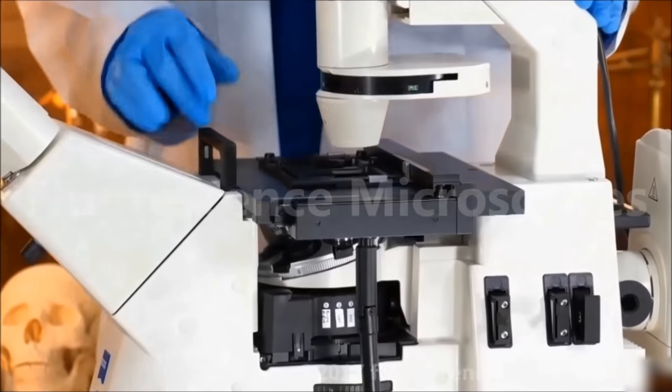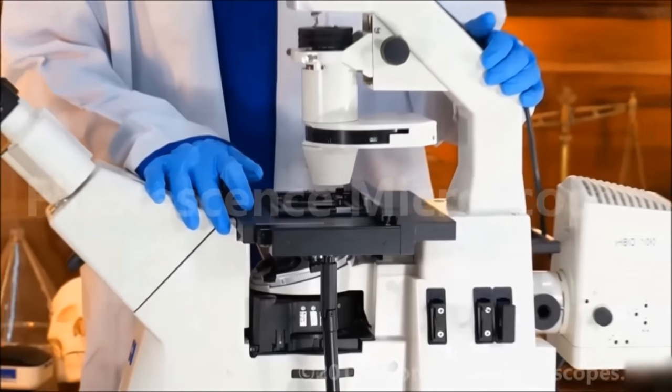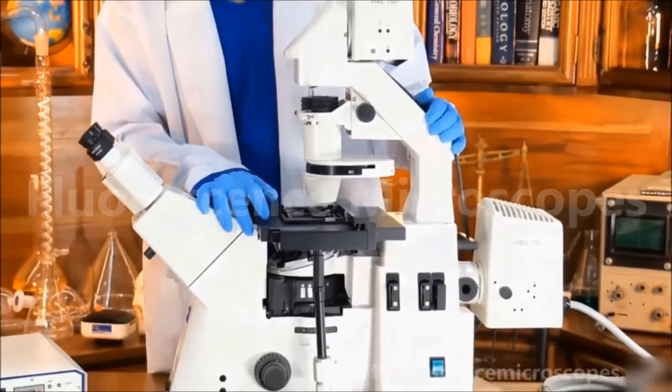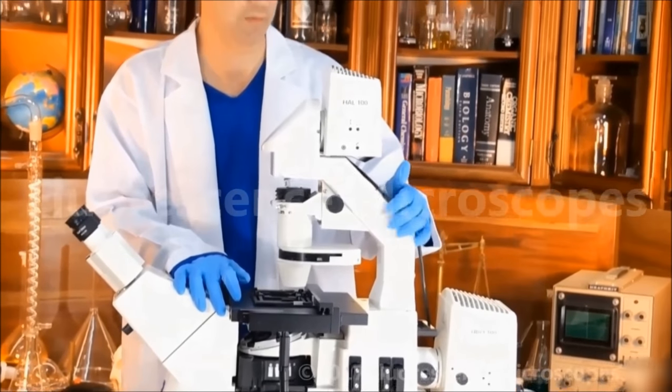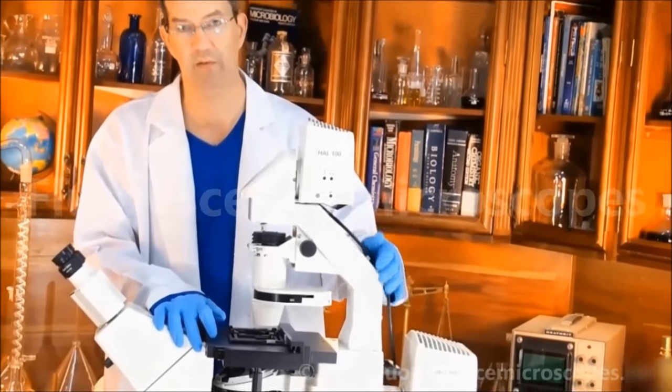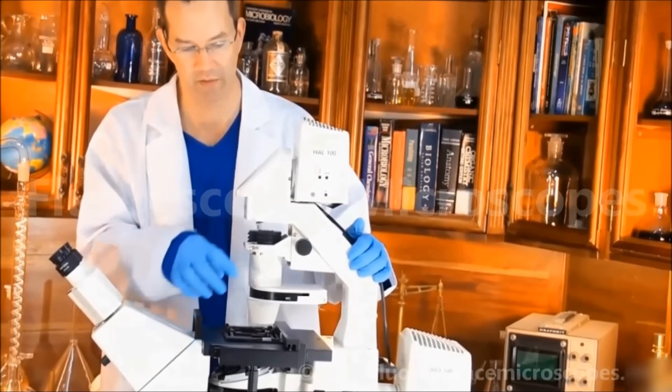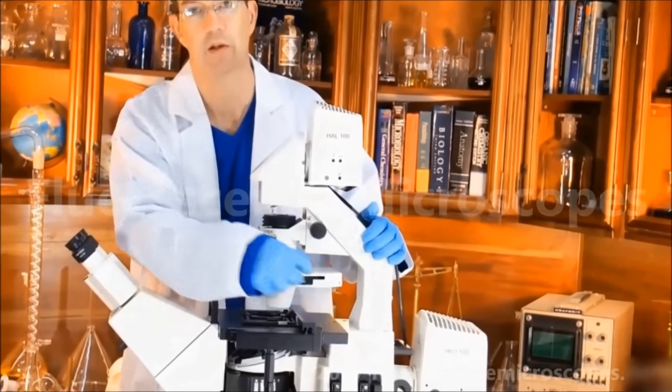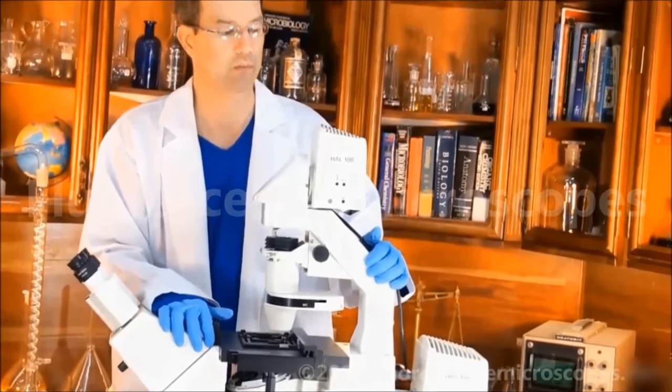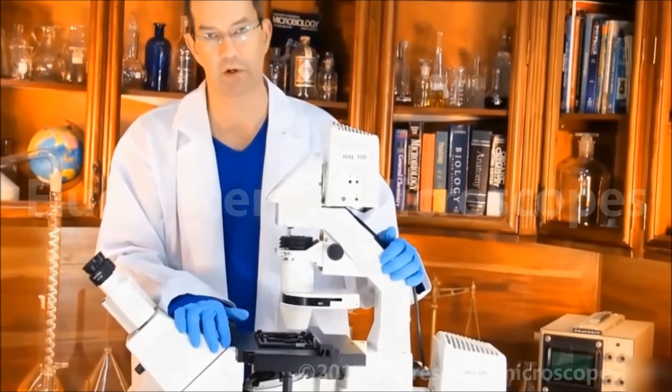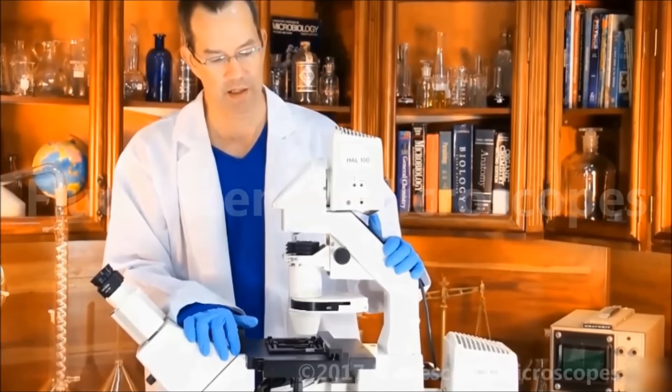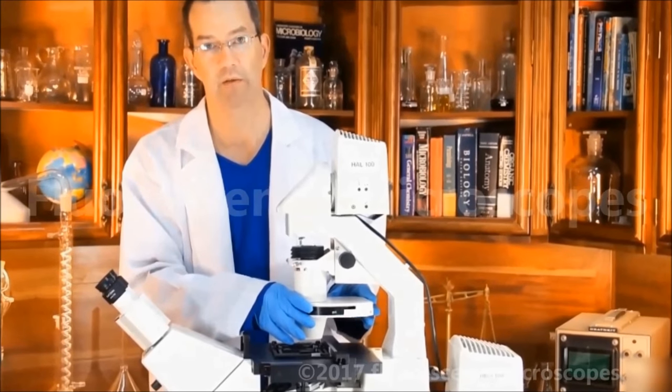When you start looking at other Axiovert 200 systems, some of them have a very simple transmitted light system. They have a very simple arm. They have a very simple slider. It's almost just a bar that slides in and out from the phase contrast system, and they're 30 watt. This is the full version that has the 100 watt and the rotary condenser.